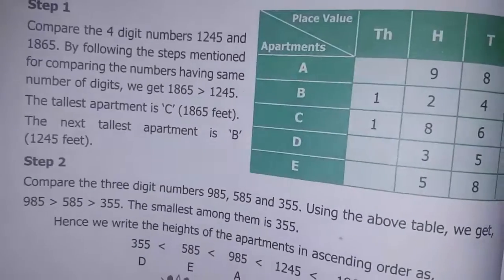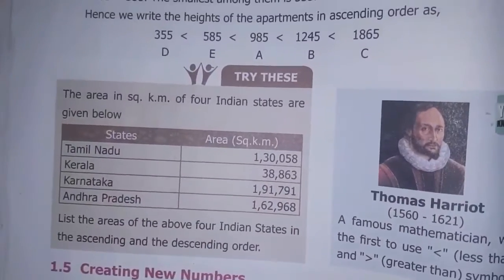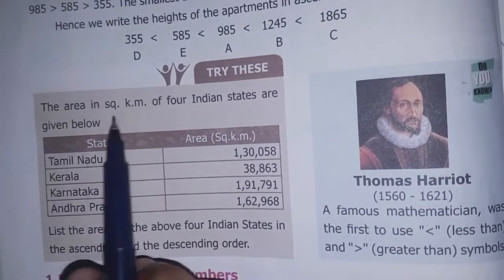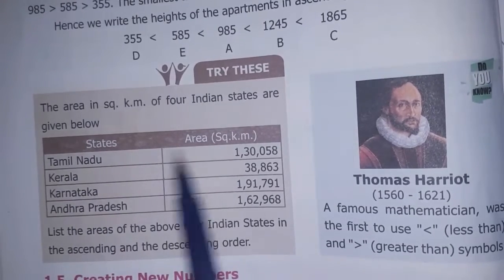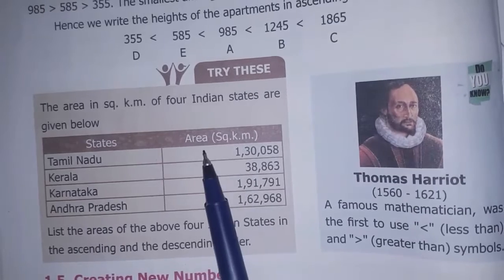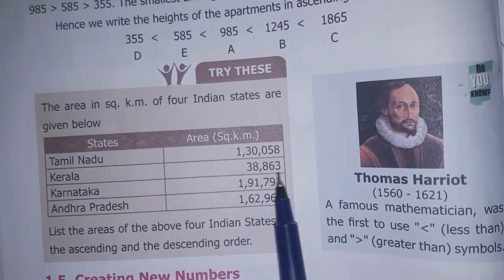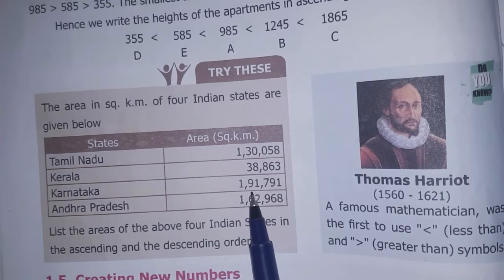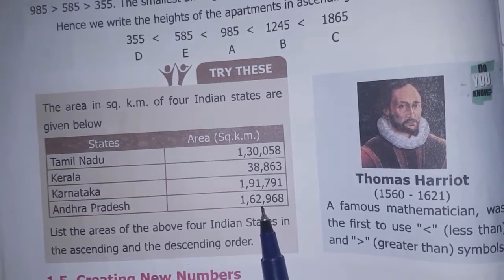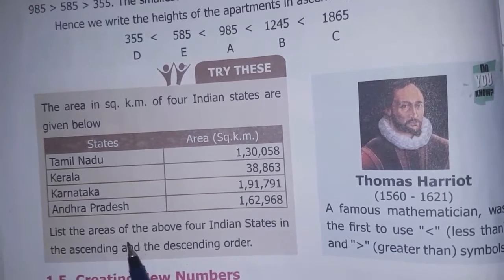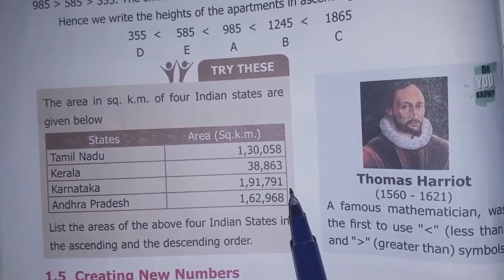Next, page number 12. The area in square kilometers of 4 Indian states are given below: Tamil Nadu is 130,058 sq km, Kerala is 38,863 sq km, Karnataka is 191,791 sq km, and Andhra Pradesh is 162,968 sq km. List the areas of these 4 Indian states in ascending and descending order.